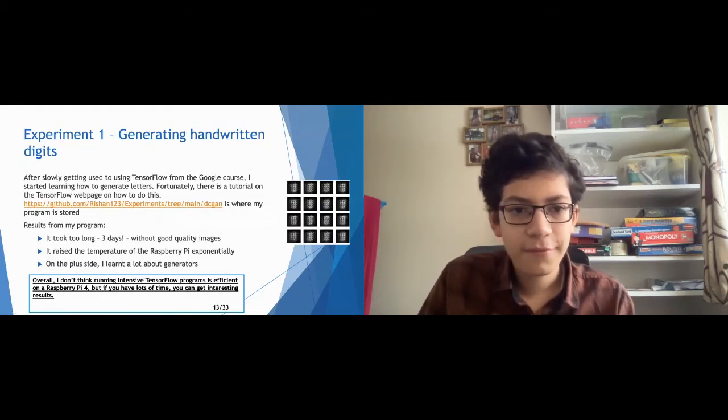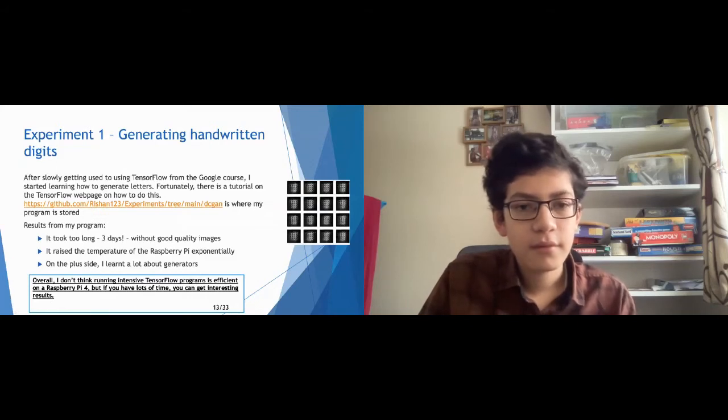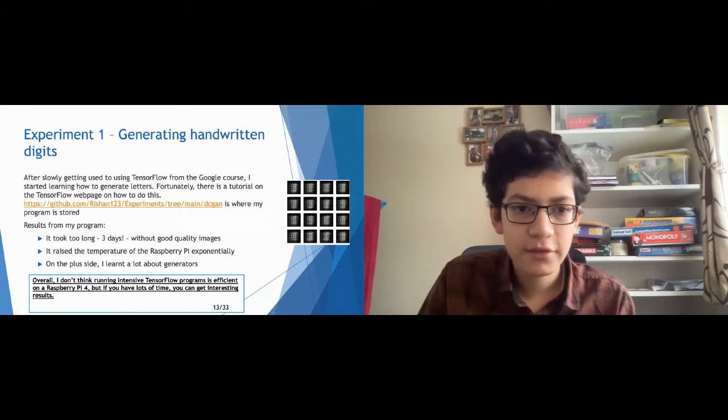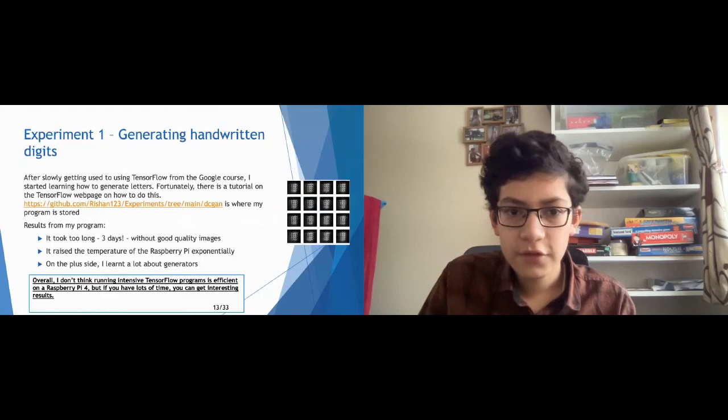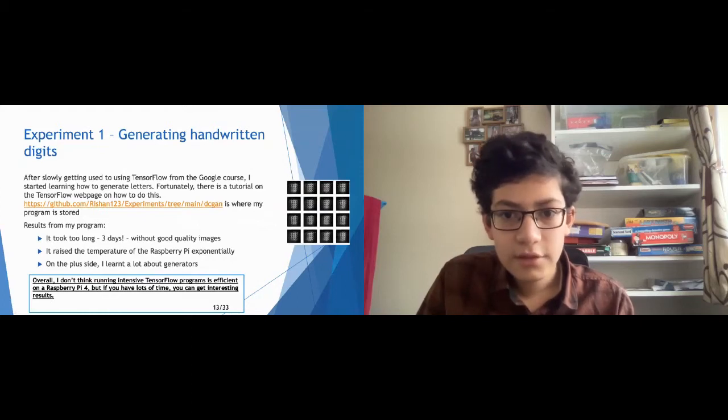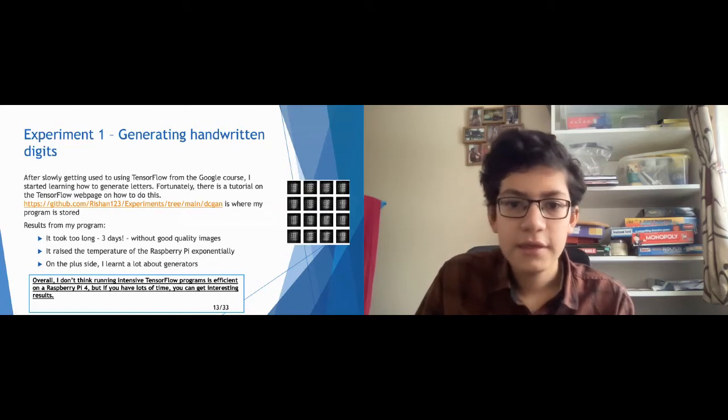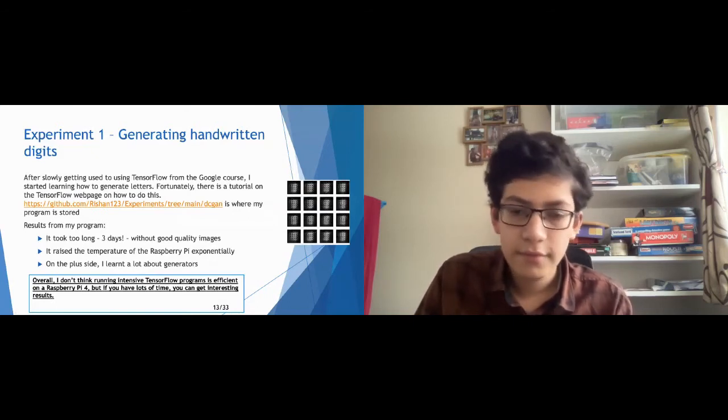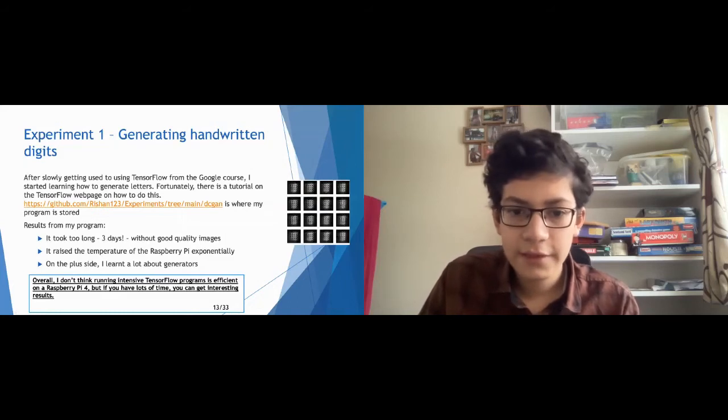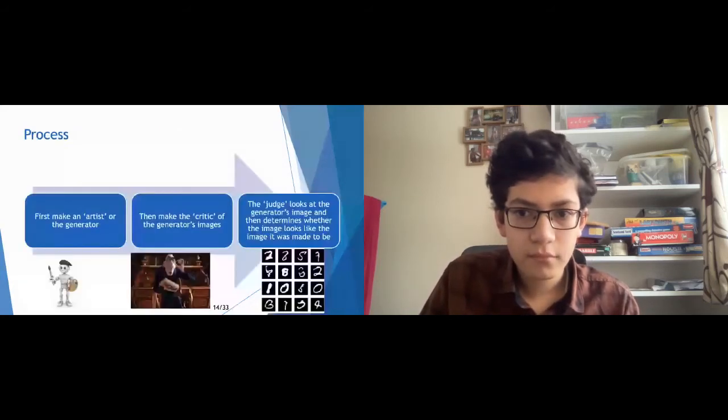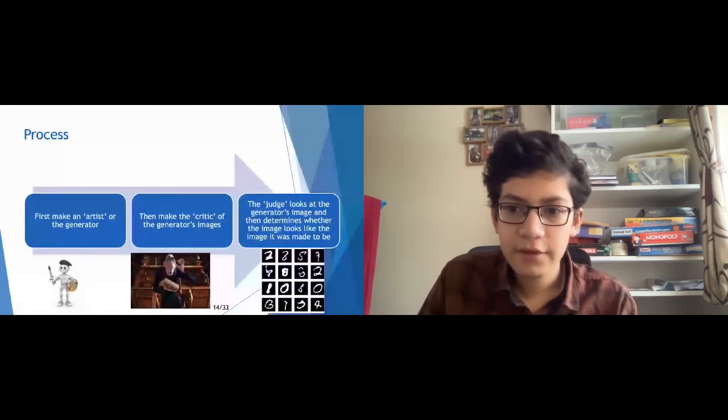So, this is the process of the handwritten digits generator. So, we first make an artist, also known as a generator. Then, make the critic of the generator's images. The judge looks at the artist's image, and then determines whether the image looks like it was made to be.